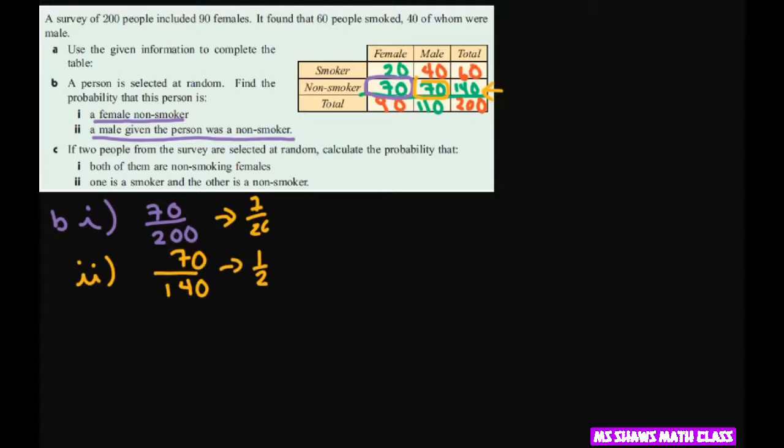Now for C, if two people were selected at random, we have to calculate that both of them are female non-smokers. We already calculated the first one, which was 7 twentieths.